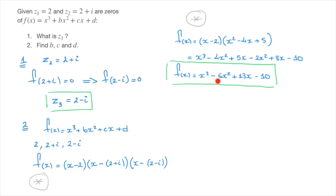So b will equal negative 6, c will equal 13, and d will equal negative 10. In other words, we can now state that b equals negative 6, c equals 13, and d equals negative 10.